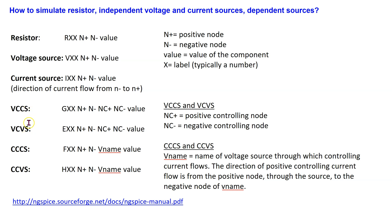For the two voltage-controlled sources, we specify the two nodes where the device is connected and the two nodes providing the controlling voltage, and finally the coefficient value. For the two current-controlled sources, we need to place a zero-volt test source in the path of the controlling current, then specify the name of the test source in the netlist via the V-name parameter. We also specify the two nodes where the current-controlled source is connected and the coefficient value. The zero-volt test source acts like an ammeter and does not disturb the original circuit.